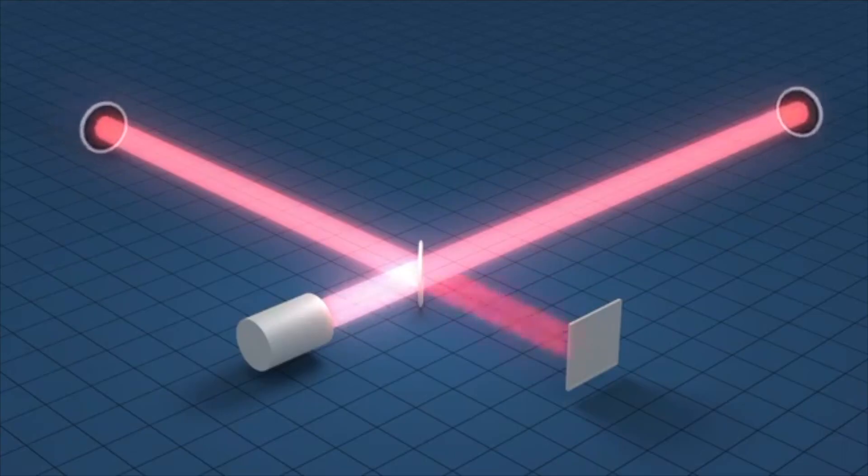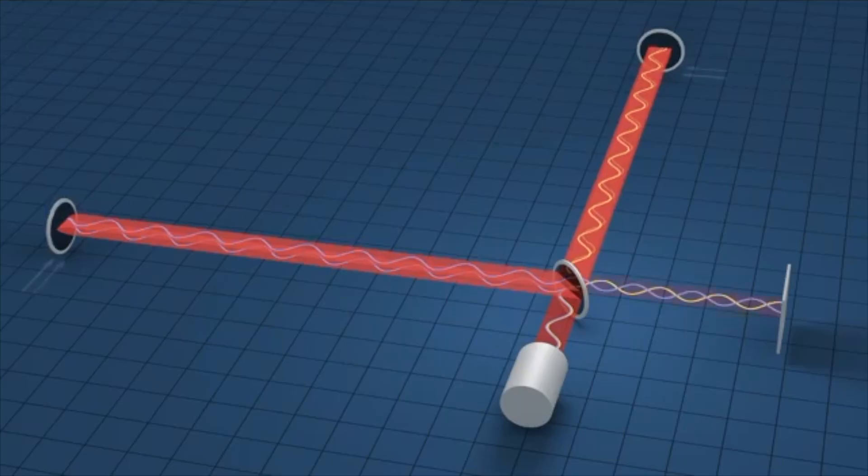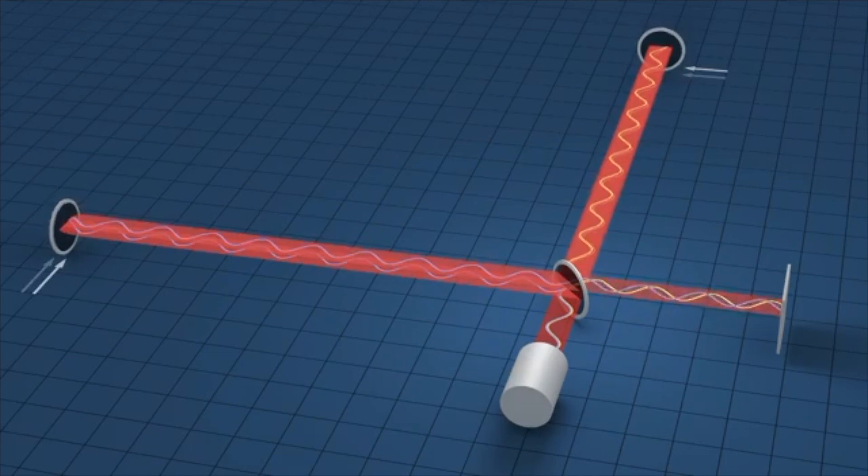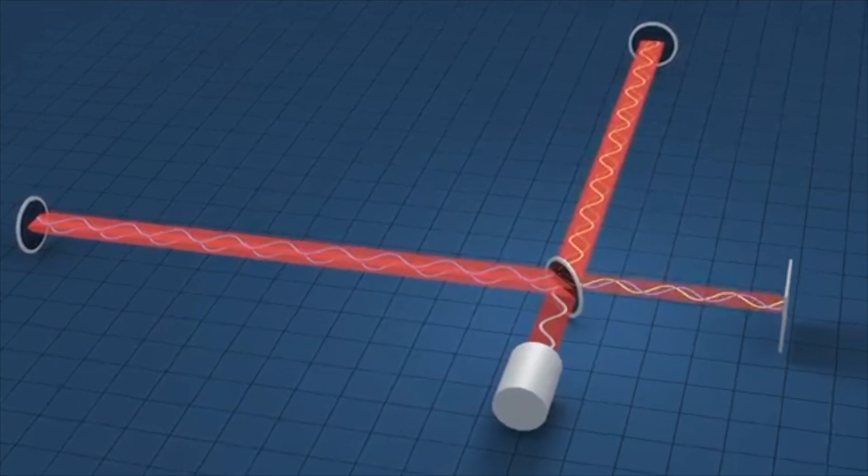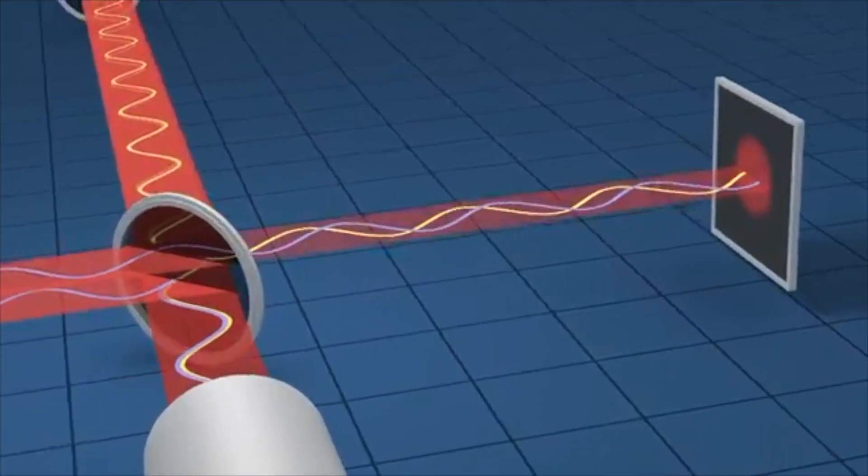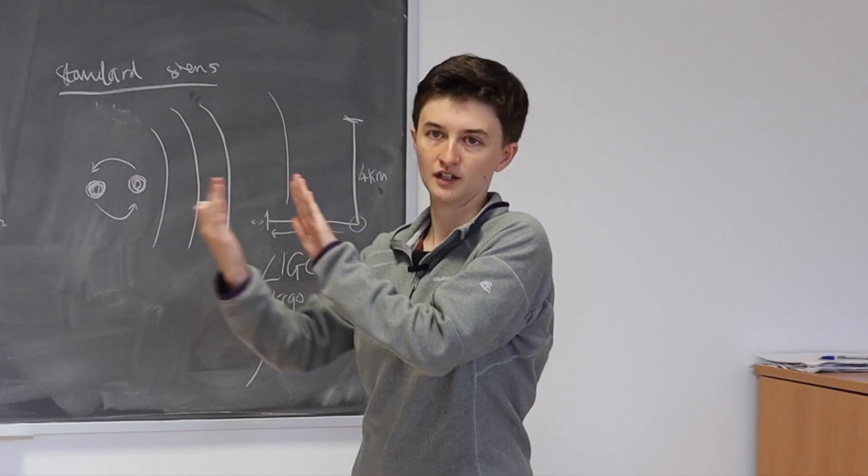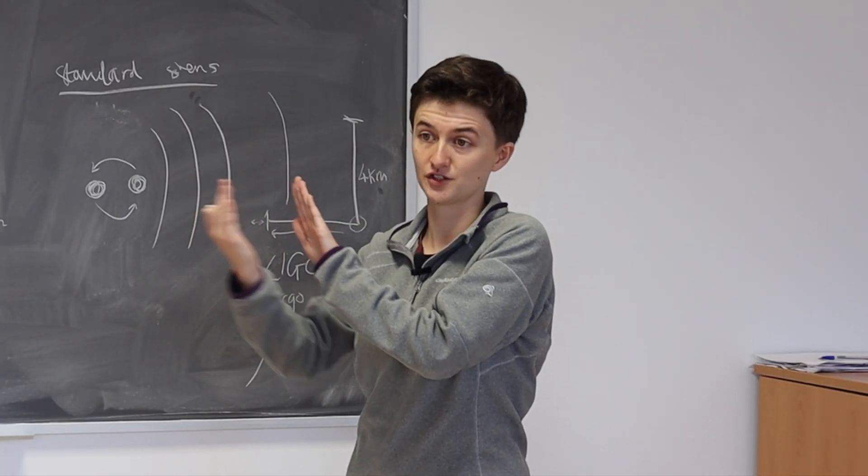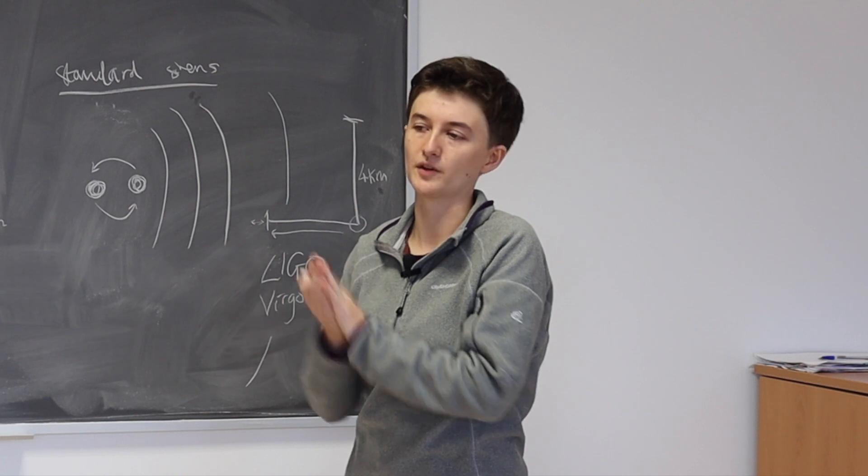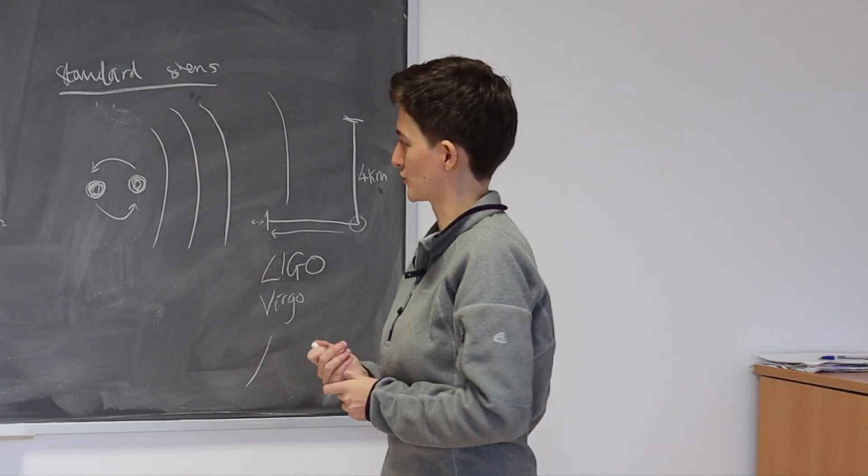But what happens when a gravitational wave passes? Well, what it does to these detectors is causes them to oscillate backwards and forwards very slightly. So each arm of the detector essentially grows and shrinks as the gravitational wave passes through. And because we have this very sensitive laser shining through there, we can work out essentially the change in the distance and the change in the length of the arm caused by the gravitational wave, and so its strength.